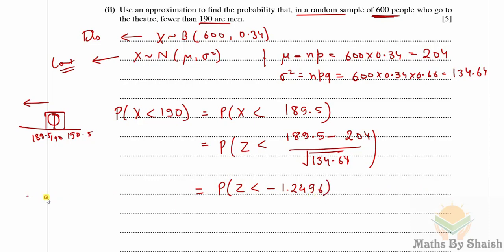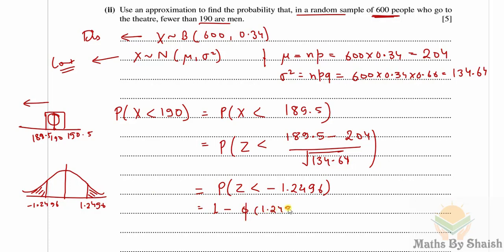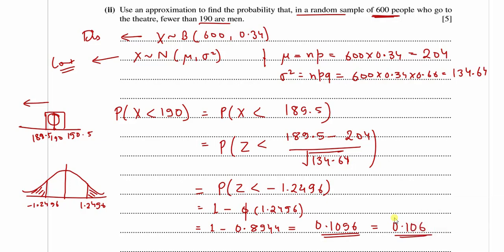Since the Z value is negative, we use 1 − Φ(1.2496) = 1 − 0.8944 = 0.1056. To three significant figures, the probability is 0.106. That concludes questions 1 through 5 (parts a and b); the last two questions will be covered in the next video.